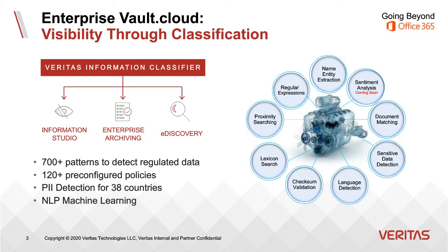Classification with EV.cloud can accelerate responding to requests from outside parties, as it can follow policies specific to subject access requests and FOIA, Freedom of Information Act. And it can help in e-discovery requests specific to ongoing litigation with customized classification rules.